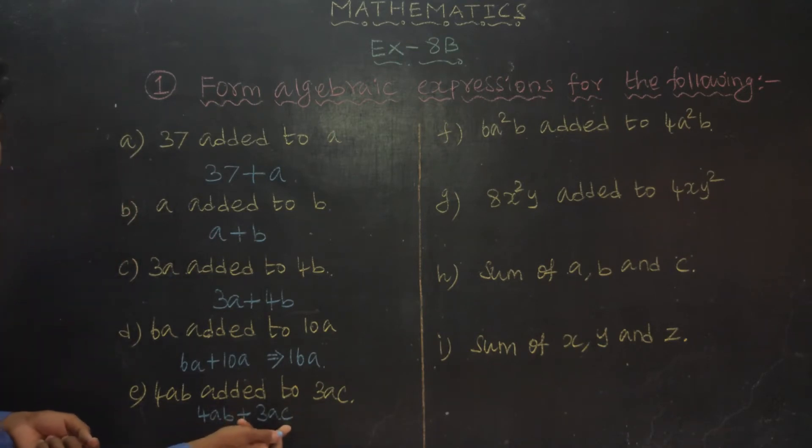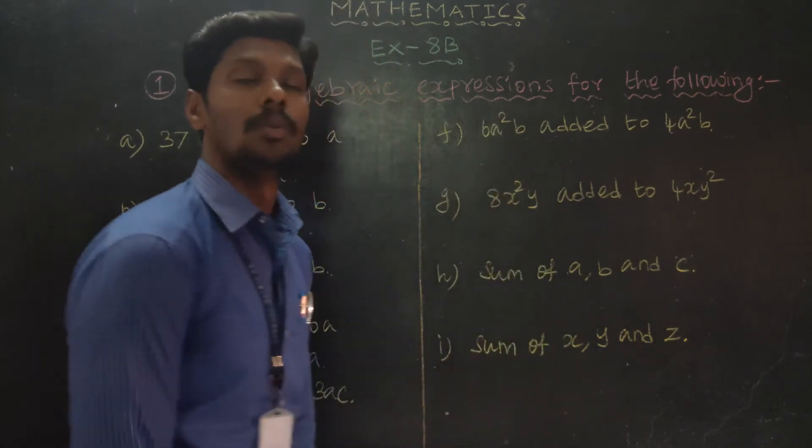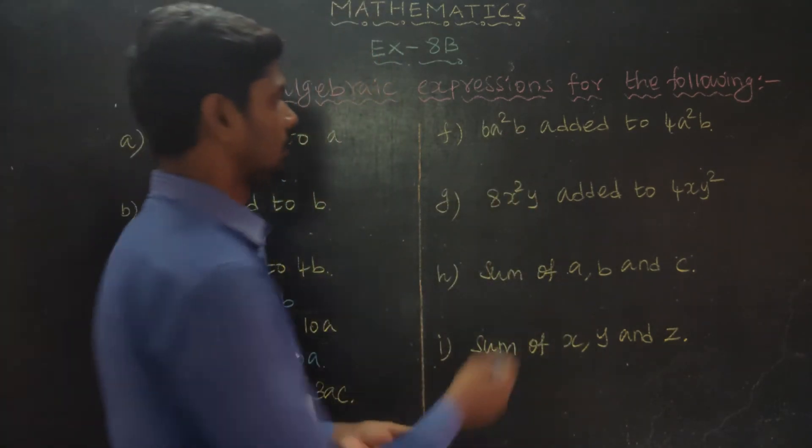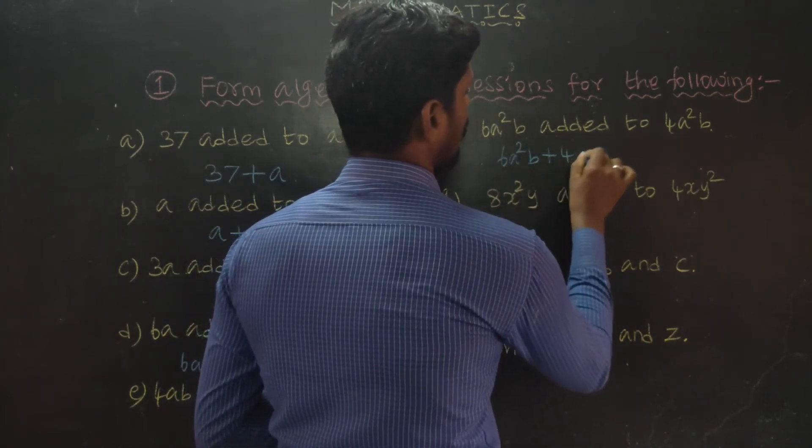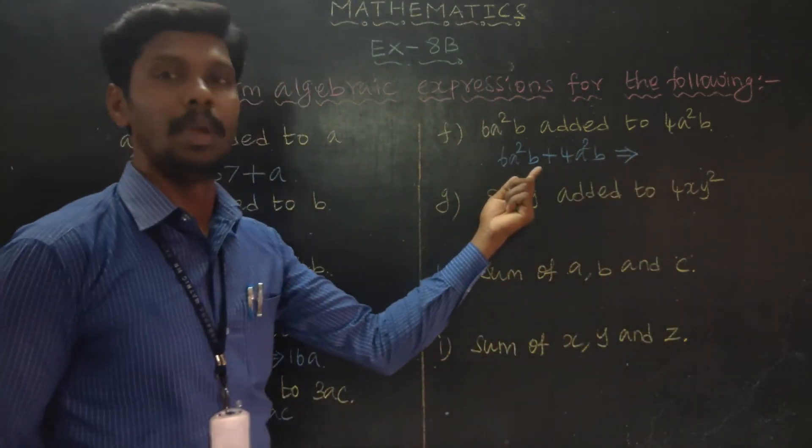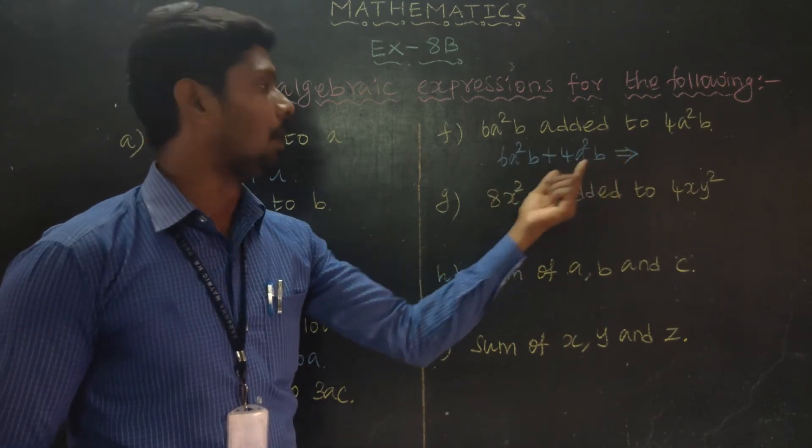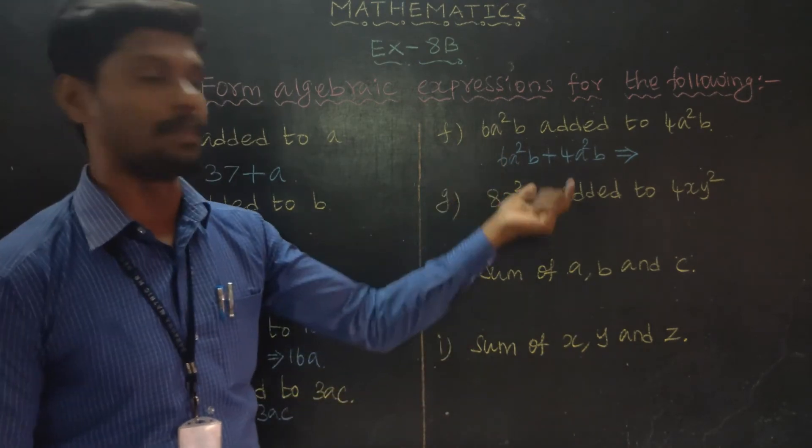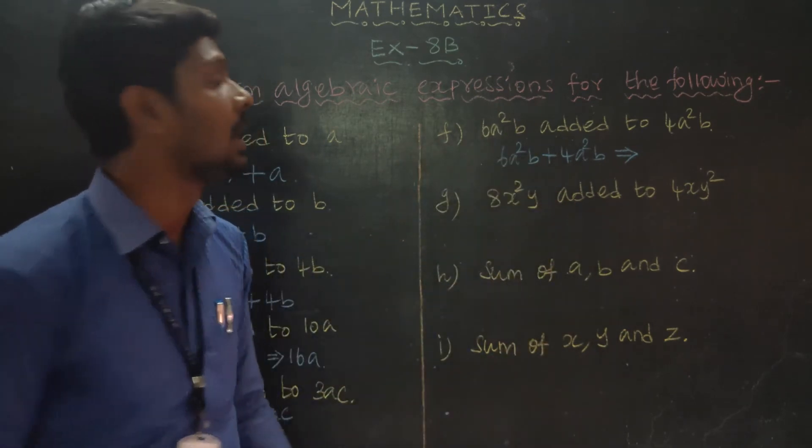Next, 6A squared B added to 4A squared B. 6A squared B added means plus 4A squared B. A squared B, A squared B. If we add like terms, a squared B, 6A squared B plus 4A squared B, 6 plus 4 is 10. 10A squared B.